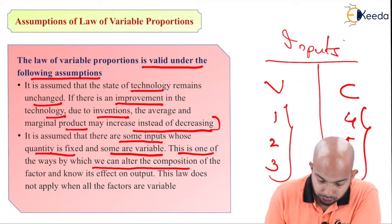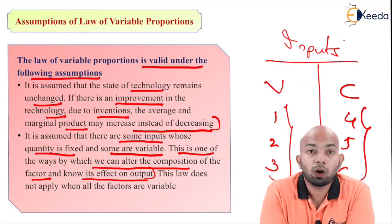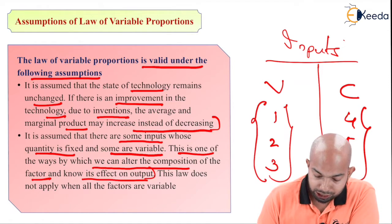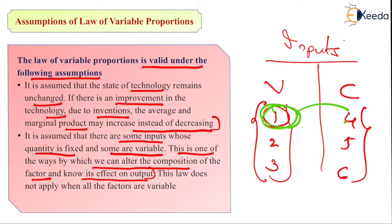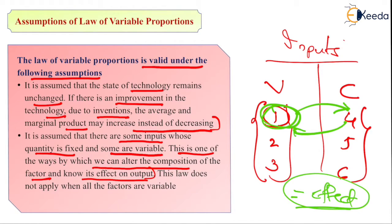This is one of the ways by which we can alter the composition of the factors and observe its effect on output. For example, if factor 1 moves from variable to constant and factor 4 moves from constant to variable, what will be the effect on output? These are basic experiments we do by altering the composition of variables and constants to study the resulting changes.